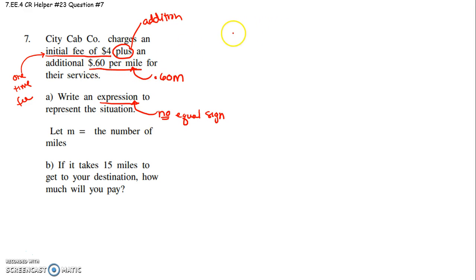So, it's $0.60 per mile. That means .60 times however many miles you travel plus, there's your addition, and a one-time fee of $4. There's our expression. No equal sign. It's an expression.